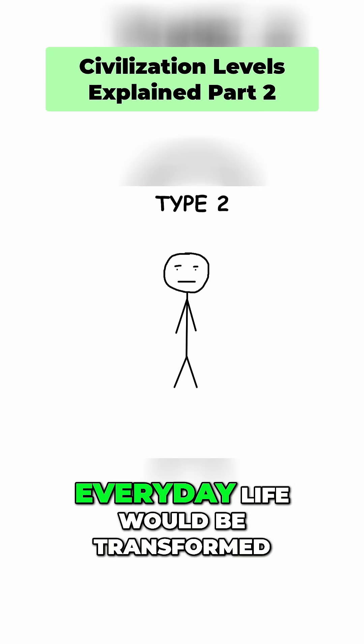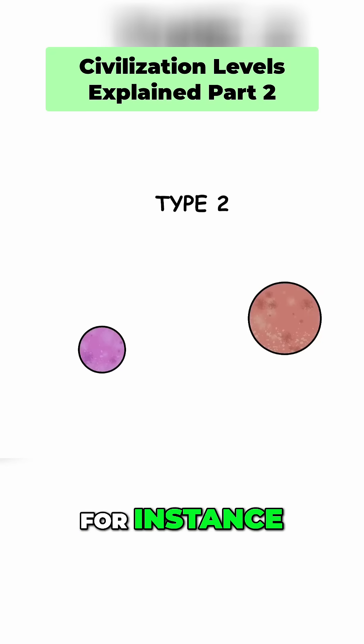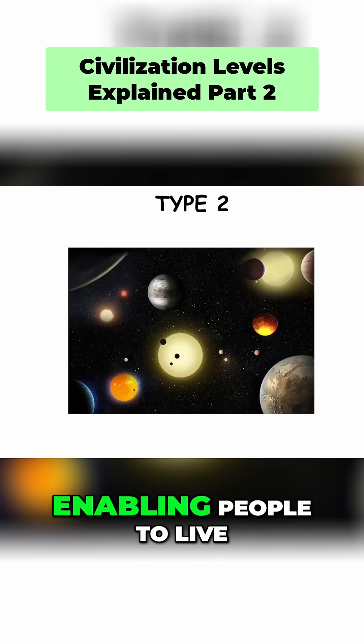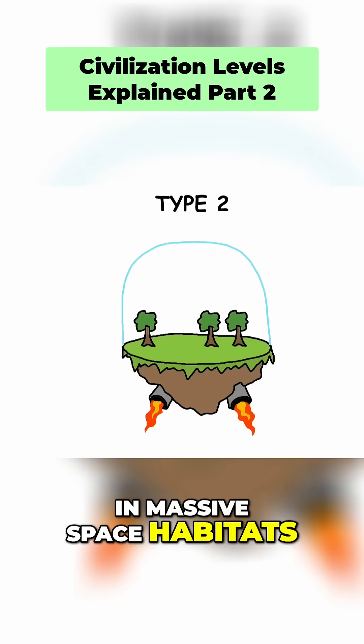In such a civilization, everyday life would be transformed. For instance, interplanetary travel might be as routine as air travel is for us, enabling people to live on different planets or in massive space habitats.